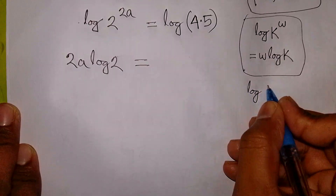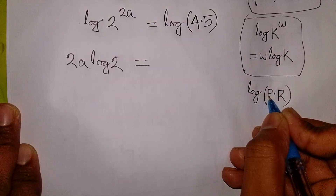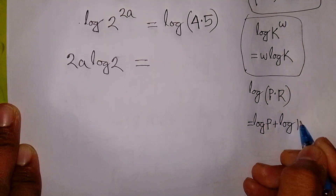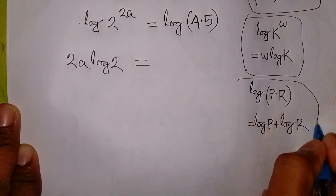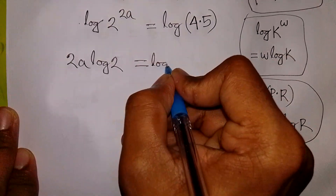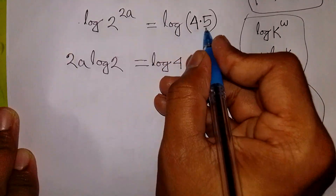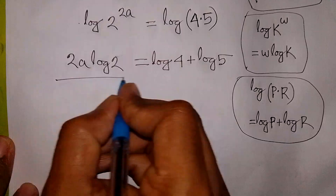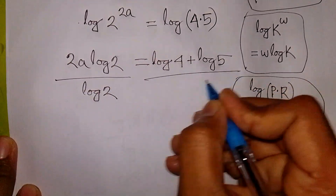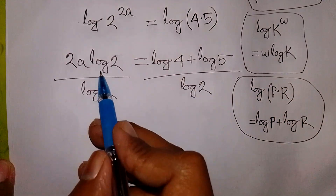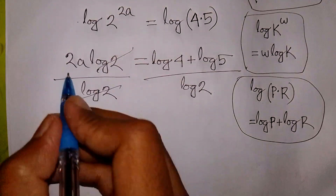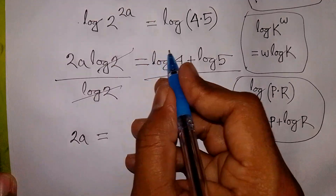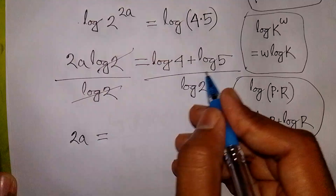We apply the formula: log of P times R is equal to log P plus log R. So it will be log 4 plus log 5. Now we divide both sides by log 2, giving 2A equal to log 4 over log 2 plus log 5 over log 2.